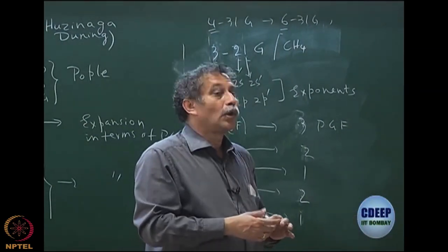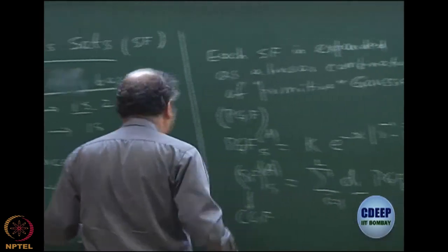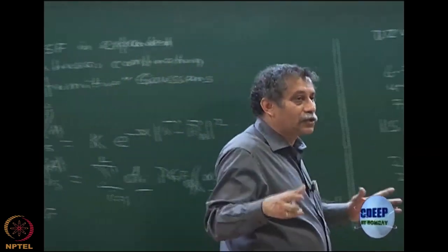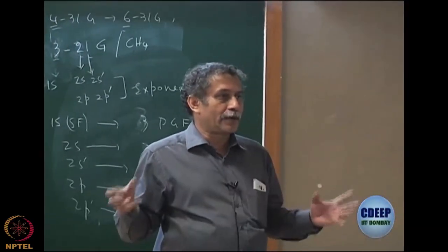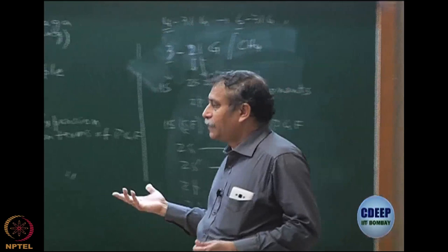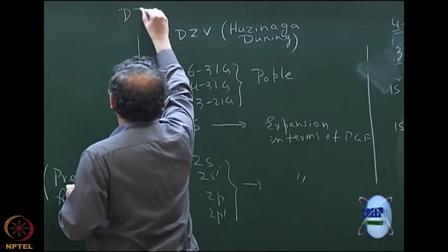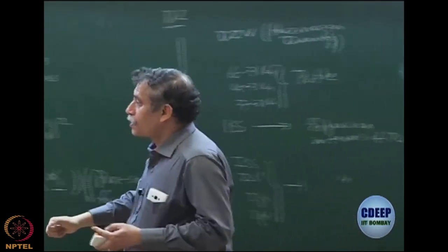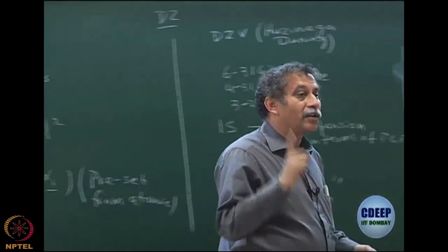The core function usually requires a larger number of primitives since we only use one core orbital — we want it as good as possible. Huzinaga and Dunning originally used full double zeta, meaning 1s and 1s' for the core as well. If you did that for methane, you would have 18 orbitals instead of 17.